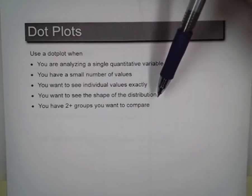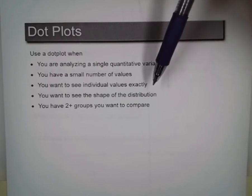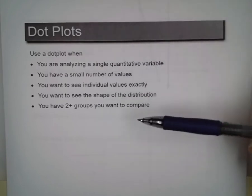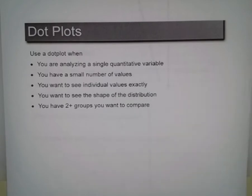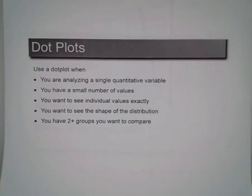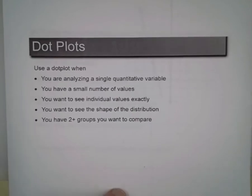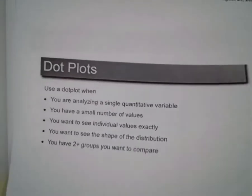You want to see the shape of the distribution. Are they skewed to the left, skewed to the right? Is it normal? A dot plot can show you that. Also, you have two or more values that you want to compare. You can use dot plots and compare two different variables like we'll see in a minute. So these are the circumstances you want when you're using dot plots.